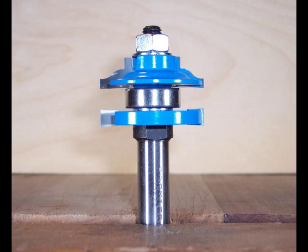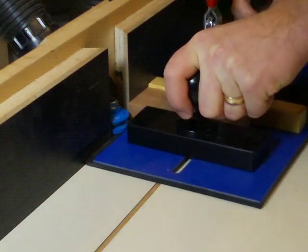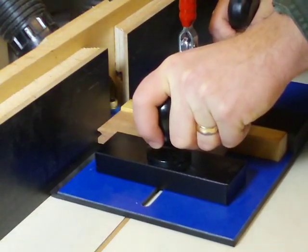Assemble the cutter to make the cope cuts on the rail ends. Using a coping sled or backer block to minimize tear out, make a test cut on a piece of scrap the same thickness as your door stock.